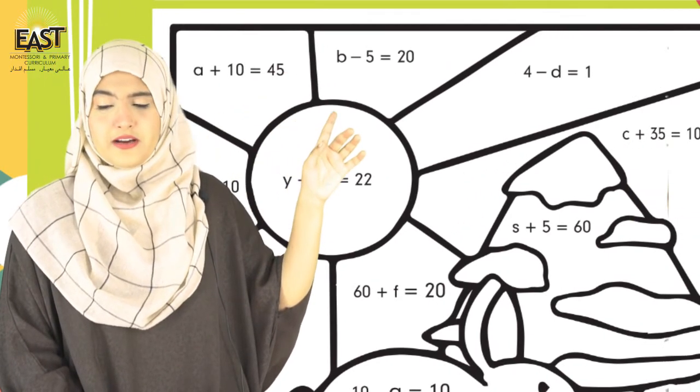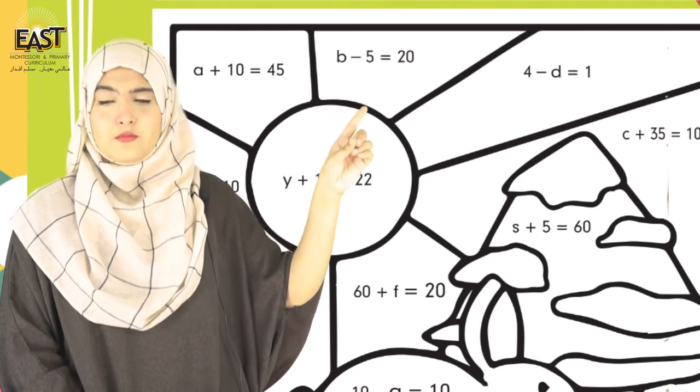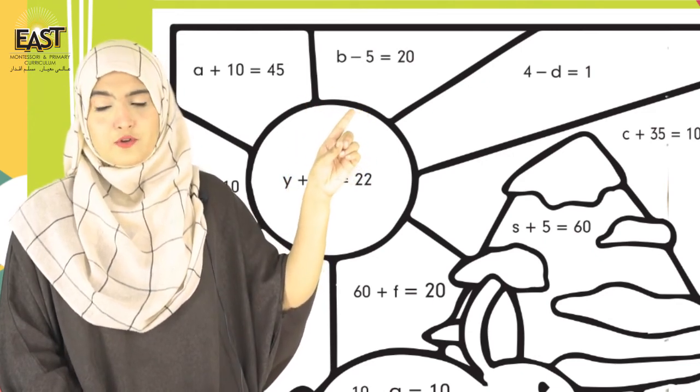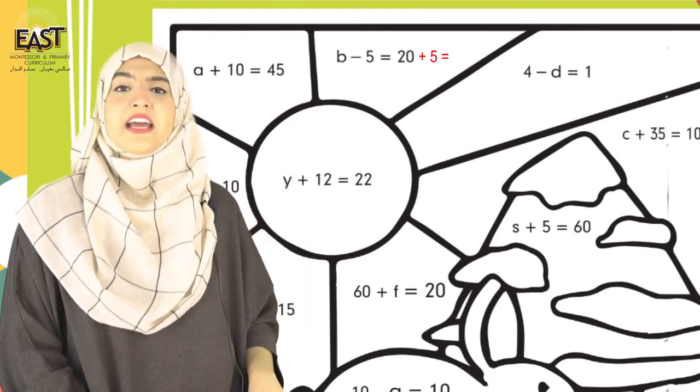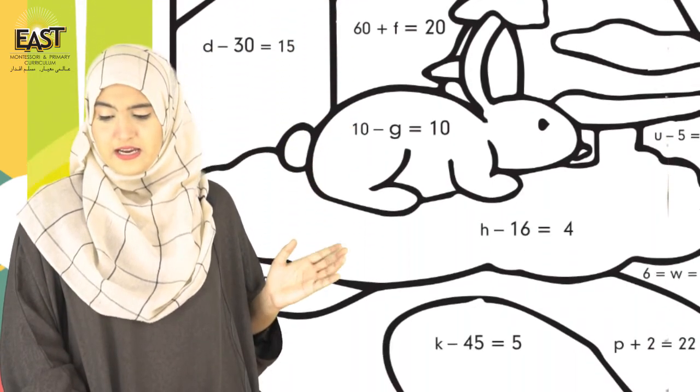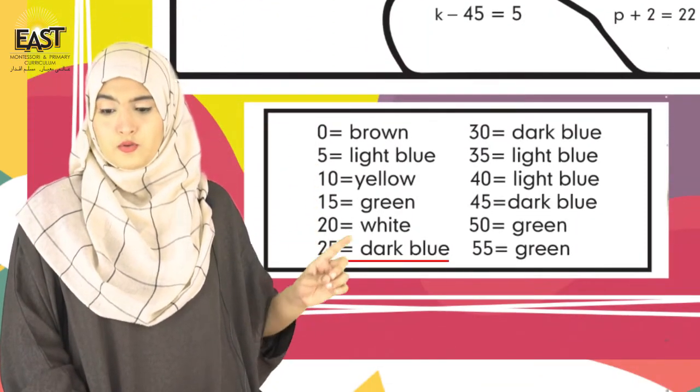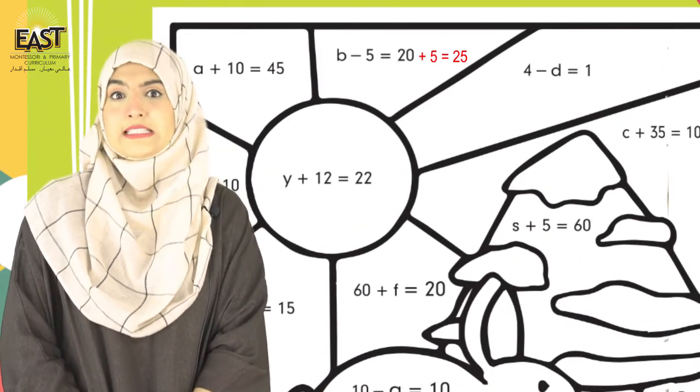Isi tariqe se, aapnei bhi b-5=20 ka answer nikalna hai. Yahaan pe minus 5 hai, equals to ke udher jake ga plus 5 ho jake ga. Kone na variable akialah raha jake ga. 20 mein se 5 plus karenghe, 25 answer á jake ga. Table mein dhundi yeh 25, kahan likha hai - 25 dark blue. Yaha pe dark blue kar dhenge.